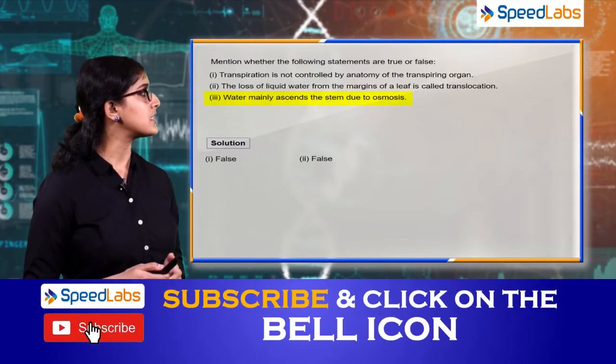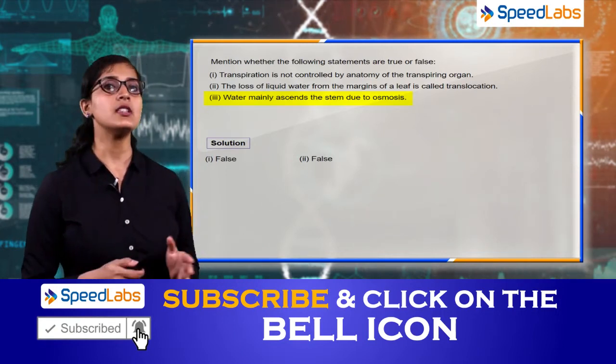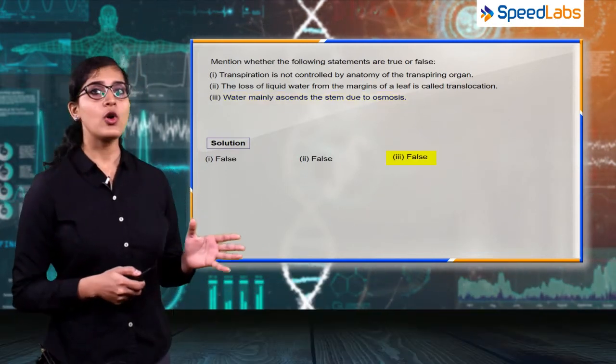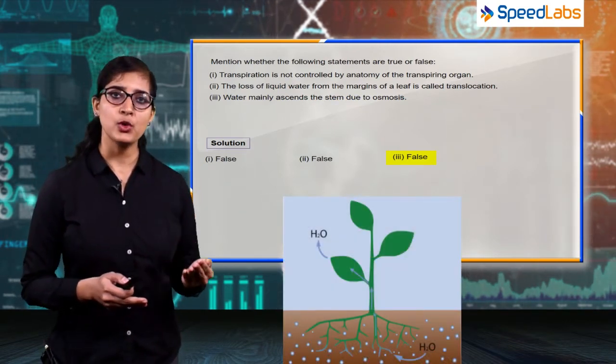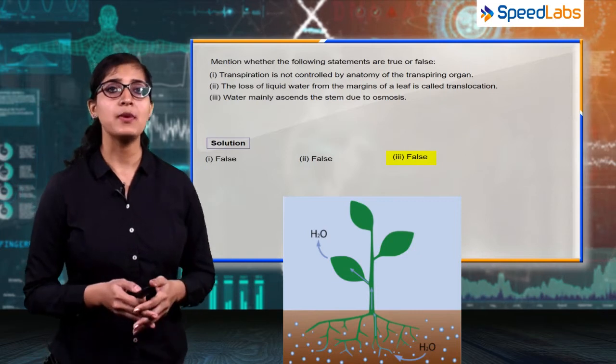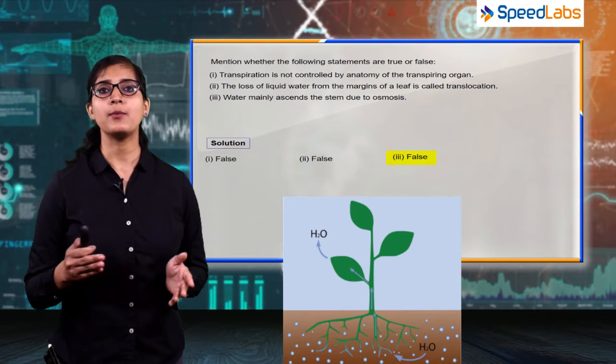Now again this statement is false because the ascending of sap in xylem are due to transpiration pull, root pressure, capillary action, but osmosis is related to the absorption of water from the soil by the roots.